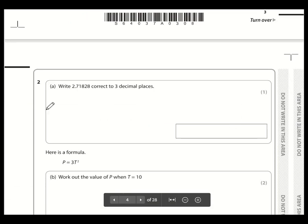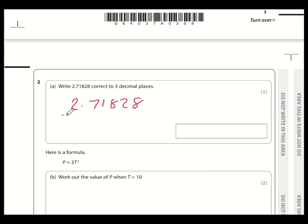Question number two, write 2.71828 correct to three decimal places. So that means we're interested in the value of the fourth decimal place. This 8, it doesn't matter, that's completely irrelevant, it's just this number that matters. It's less than 5, so this will round down to 2.718.